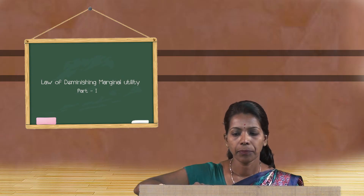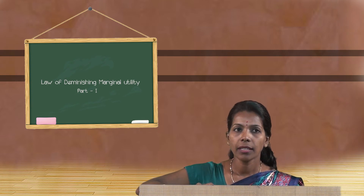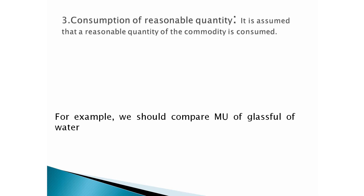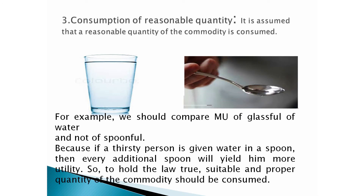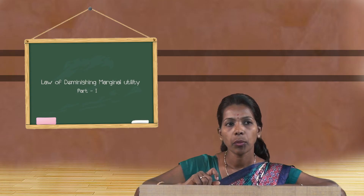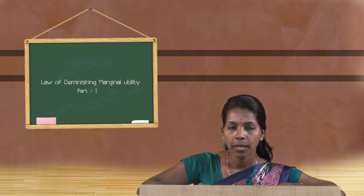The third assumption is consumption of a reasonable quantity. It is assumed that a reasonable quantity of the commodity is consumed. For example, we should compare the marginal utility of a full glass of water, not a spoonful, because if a thirsty person is given water by the spoon, every additional spoon will yield more utility. To hold the law true, a suitable and proper quantity of the commodity should be consumed.